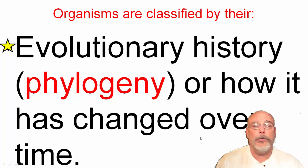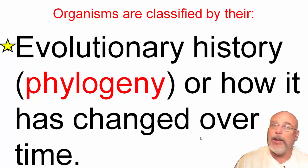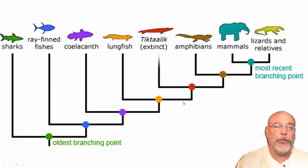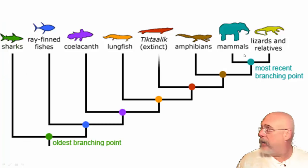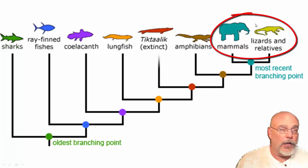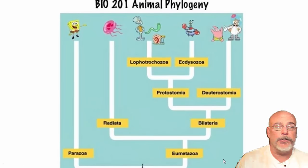A third way organisms are classified is by their evolutionary history — how a species has changed over time. Some species are more closely related and share common ancestors, so they can be grouped that way. For example, looking at this chart, sharks have been around for a very long time and are organized differently than mammals. Mammals and lizards share a more recent common ancestor than sharks.